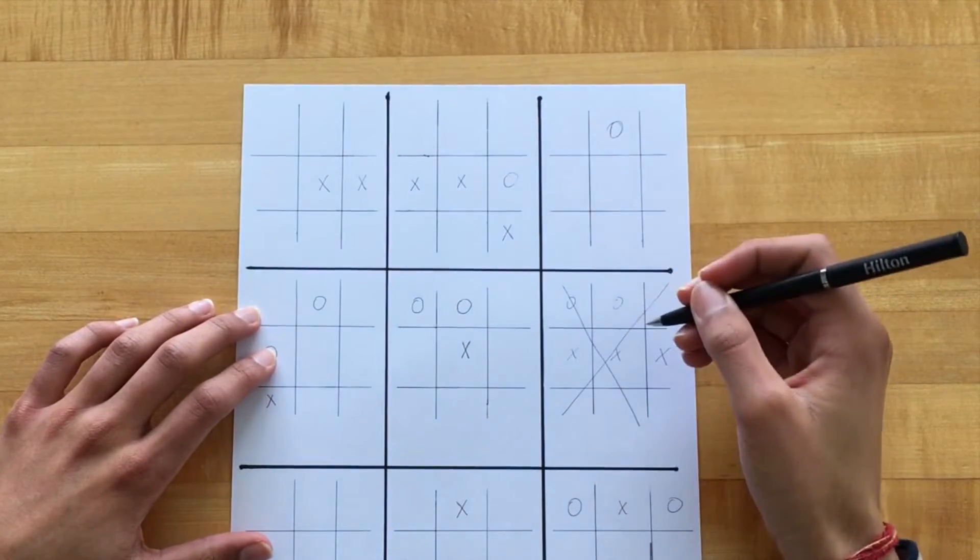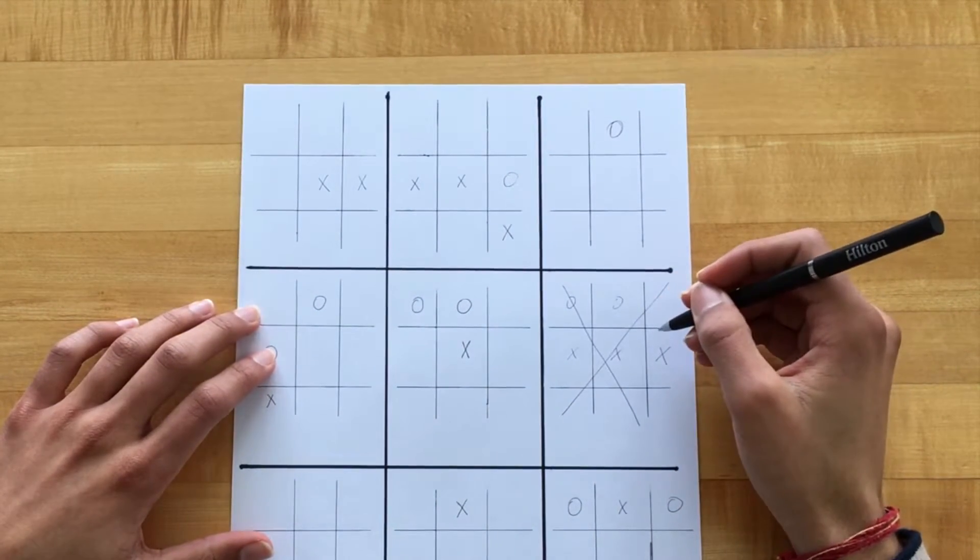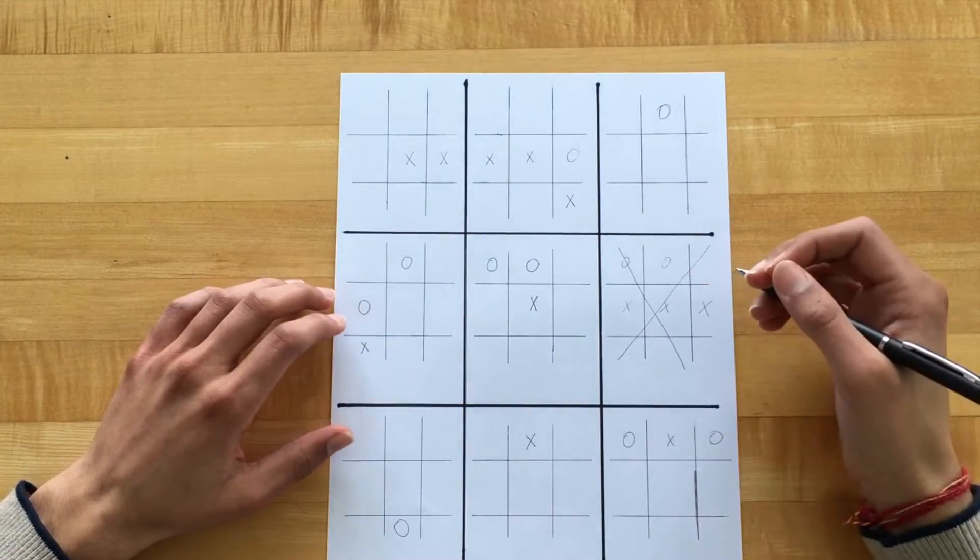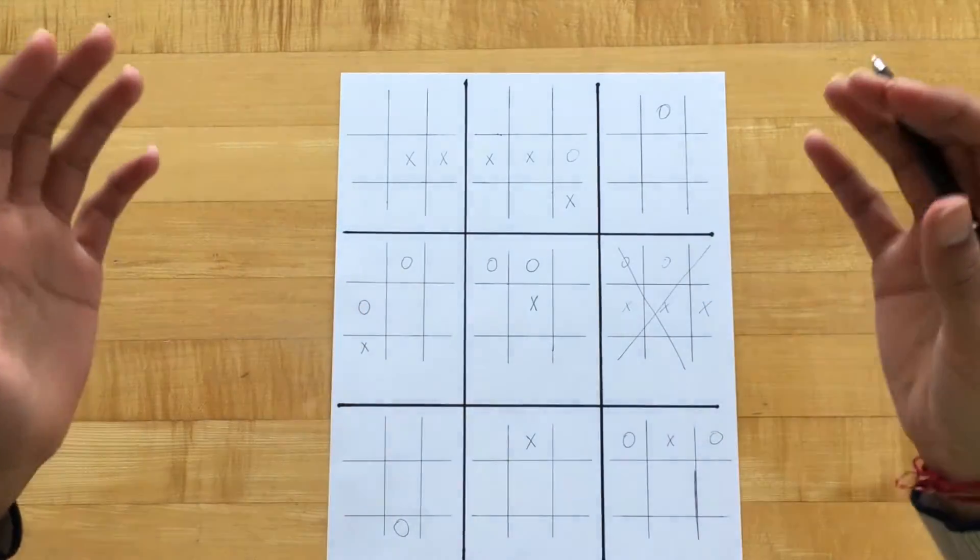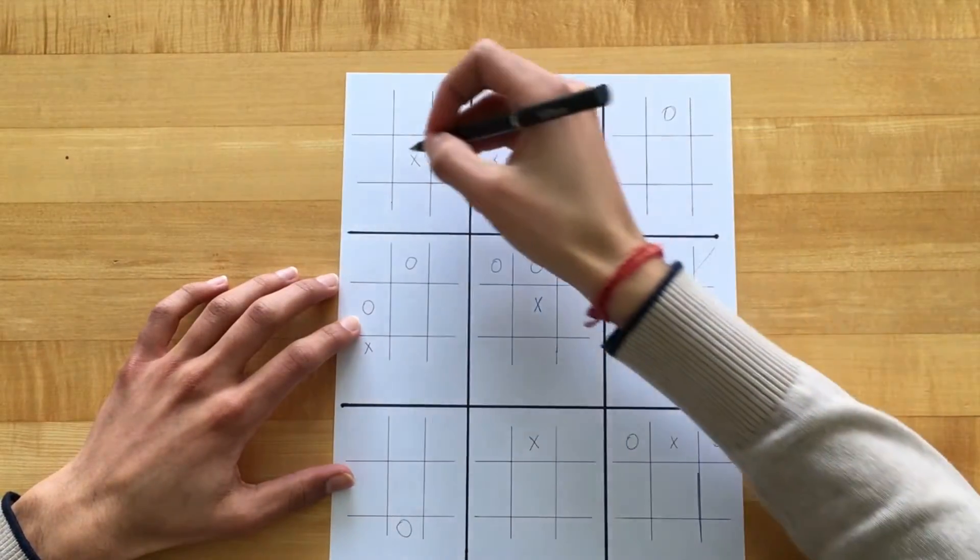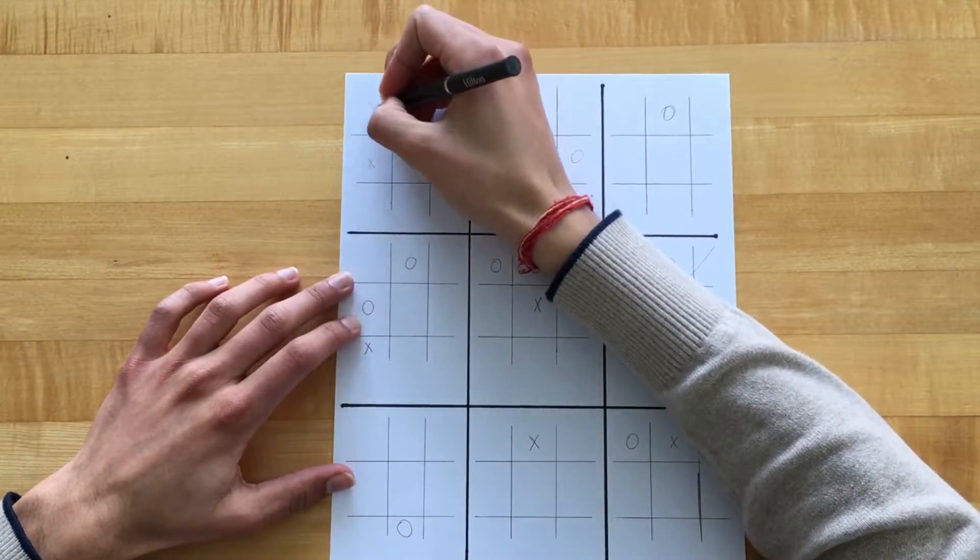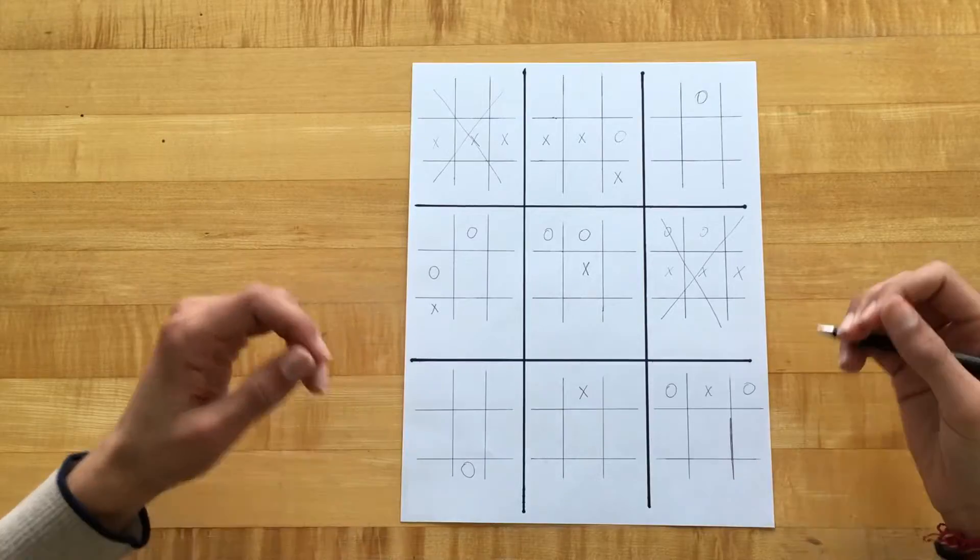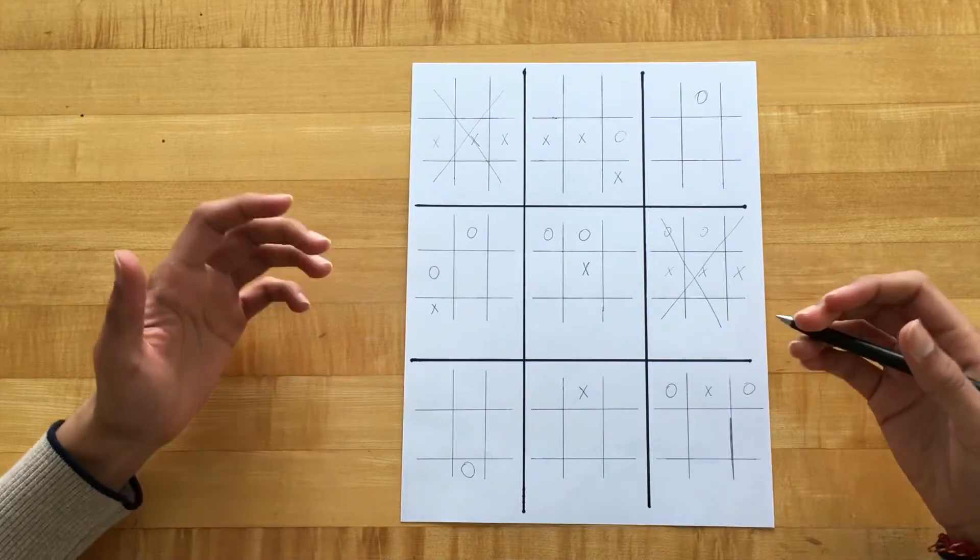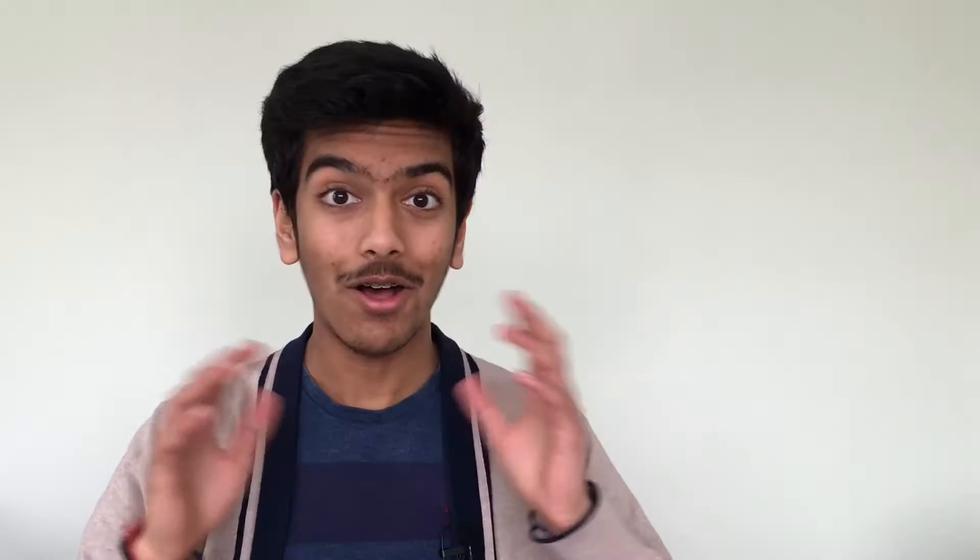But now X is sent to a board that's already been won. So when something like this happens, X can go wherever it wants on the entire board. So maybe X might go over here and win this board. Now this sort of game just keeps on going until someone gets three in a row on the larger board. Ultimate tic-tac-toe is much more complex than regular tic-tac-toe.